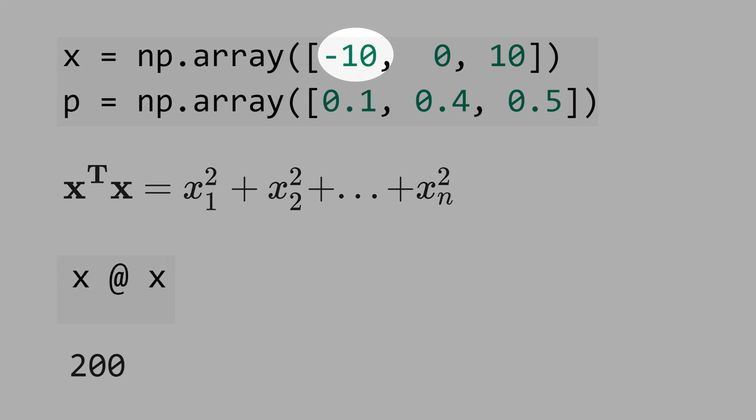because 10 times 10, 100, plus 10 times 10, this would be 200. Why you should learn vector notation?